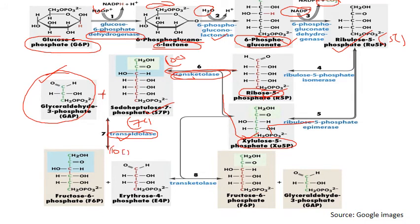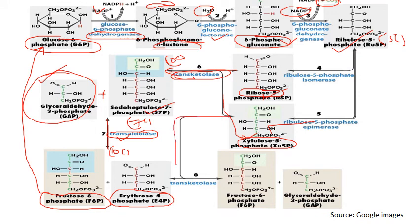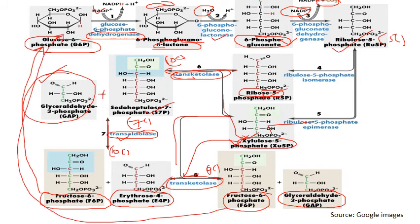Sedoheptulose-7-phosphate and glyceraldehyde-3-phosphate combine via enzyme transaldolase to form a ten-carbon intermediate, which breaks into the six-carbon fructose-6-phosphate and the four-carbon erythrose-4-phosphate. The fructose-6-phosphate is converted back to glucose-6-phosphate, while erythrose-4-phosphate combines with xylulose-5-phosphate via transketolase to form a nine-carbon intermediate yielding fructose-6-phosphate and glyceraldehyde-3-phosphate. The fructose-6-phosphate recycles to glucose-6-phosphate, while glyceraldehyde-3-phosphate is broken down to pyruvate as in glycolysis.